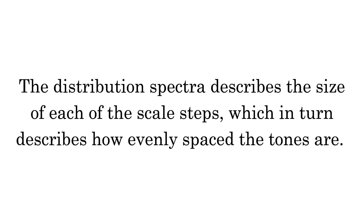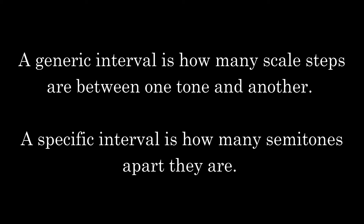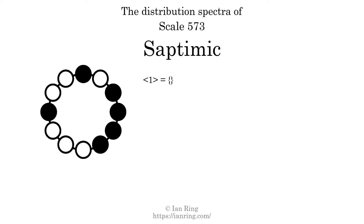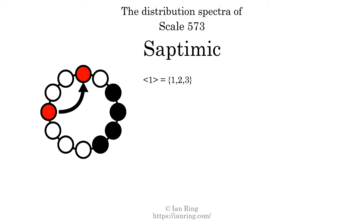The distribution spectra describes the size of each of the scale steps, which in turn describes how evenly spaced the tones are. A generic interval is how many scale steps are between one tone and another. A specific interval is how many semitones apart they are. The generic interval of one scale step comes in four different specific interval sizes: one semitone, two semitones, three semitones, and four semitones. The spectrum width of this generic interval is the highest, four, minus the lowest, one, which equals three.